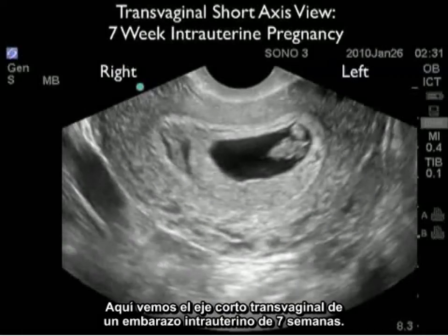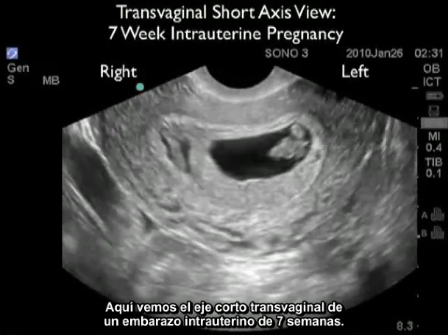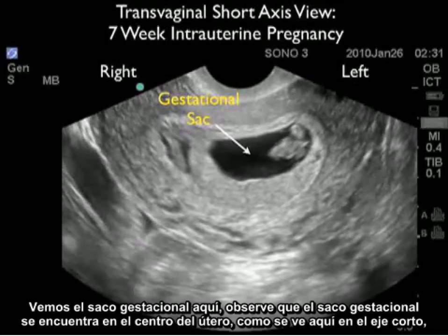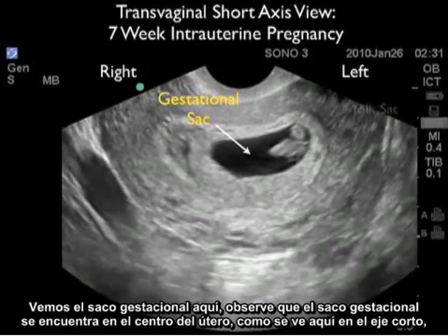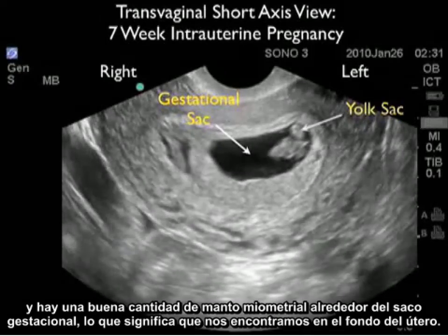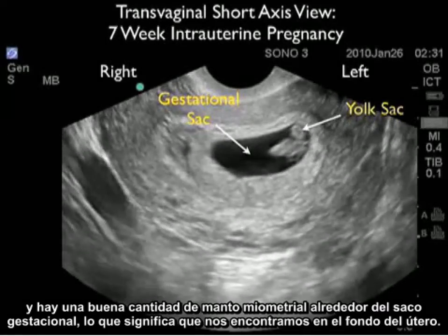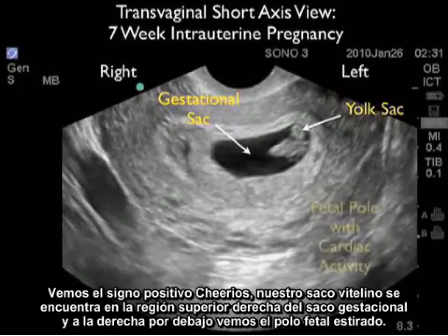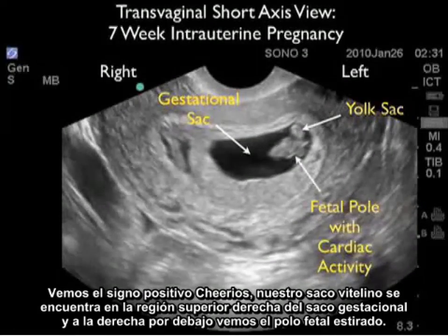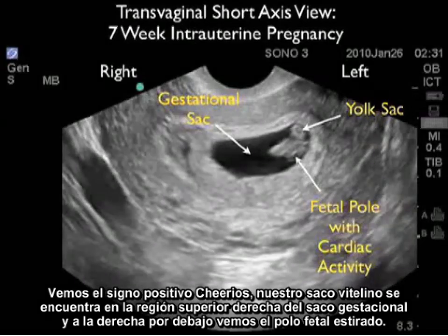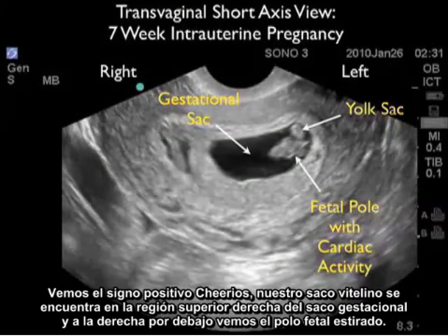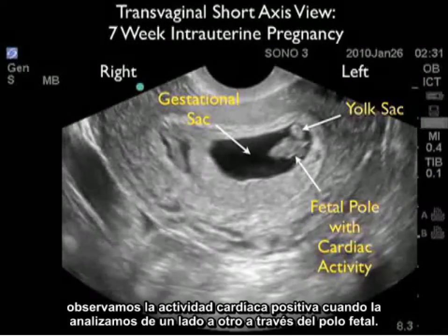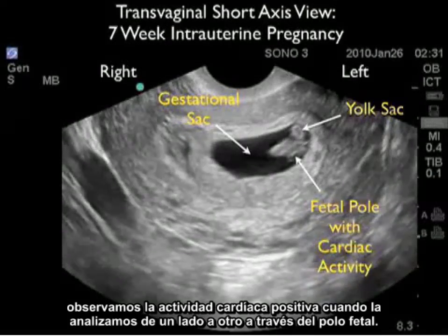Here's a transvaginal short axis view of a 7-week intrauterine pregnancy. The gestational sac is located in the center of the uterus as seen in short axis, with a good amount of myometrial mantle surrounding it, signifying a fundal location. We see the positive cheerio sign or yolk sac to the upper right aspect of the gestational sac, and right below we see the fetal pole stretched out. Notice the positive cardiac activity as we scan back and forth through the fetal pole.